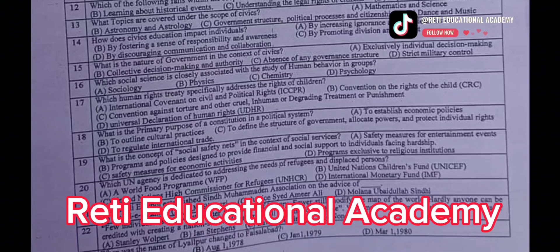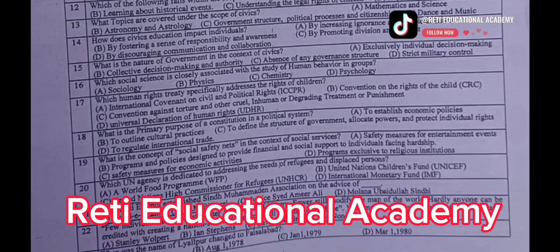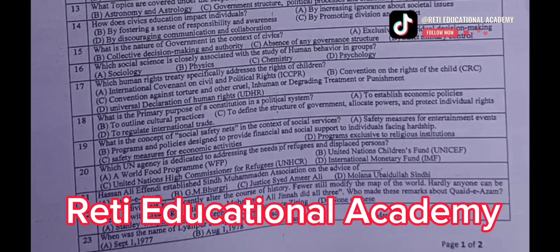Question number 19: What is the concept of social safety nets in the context of social services? A. Safety measures for entertainment events. B. Programmes and policies designed to provide financial and social support to individuals facing hardships. C. Safety measures for economic activities. D. Programmes exclusive to religious institutions. The correct answer is B.